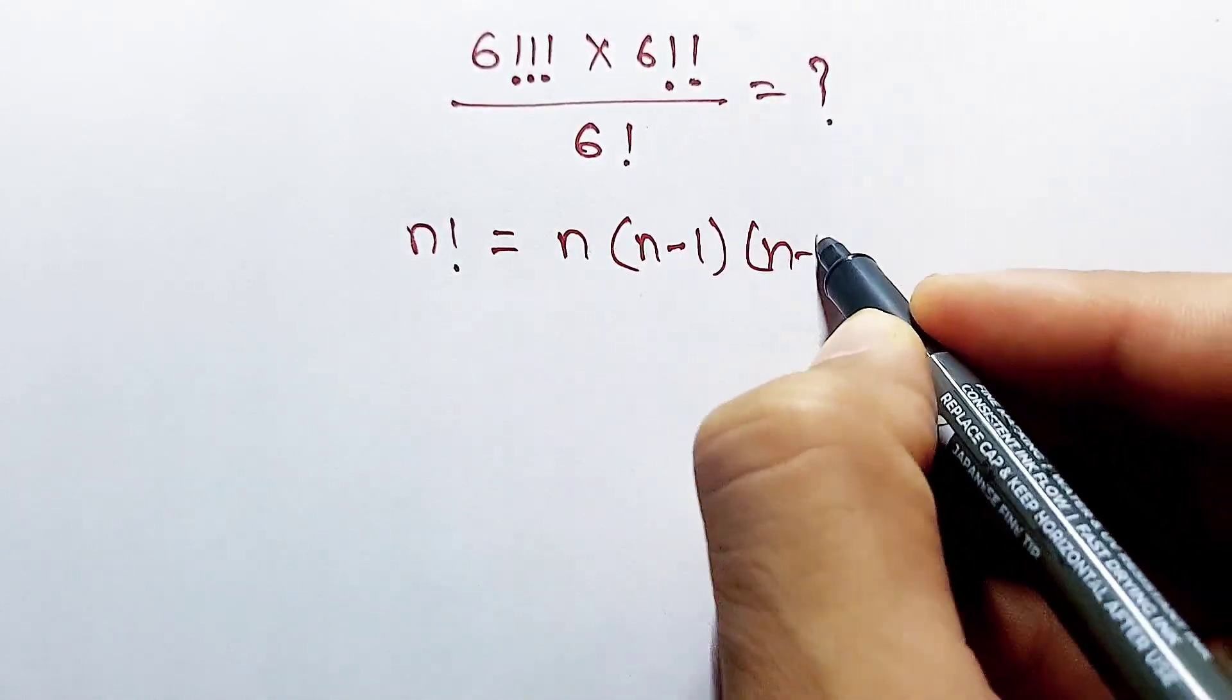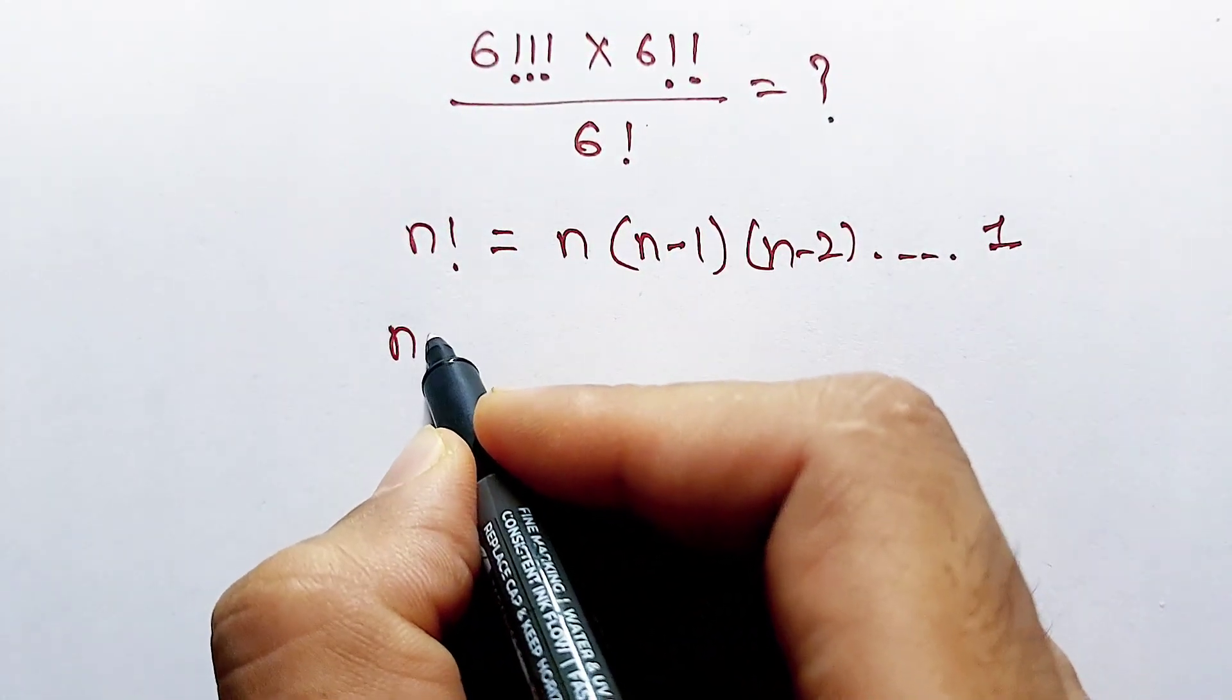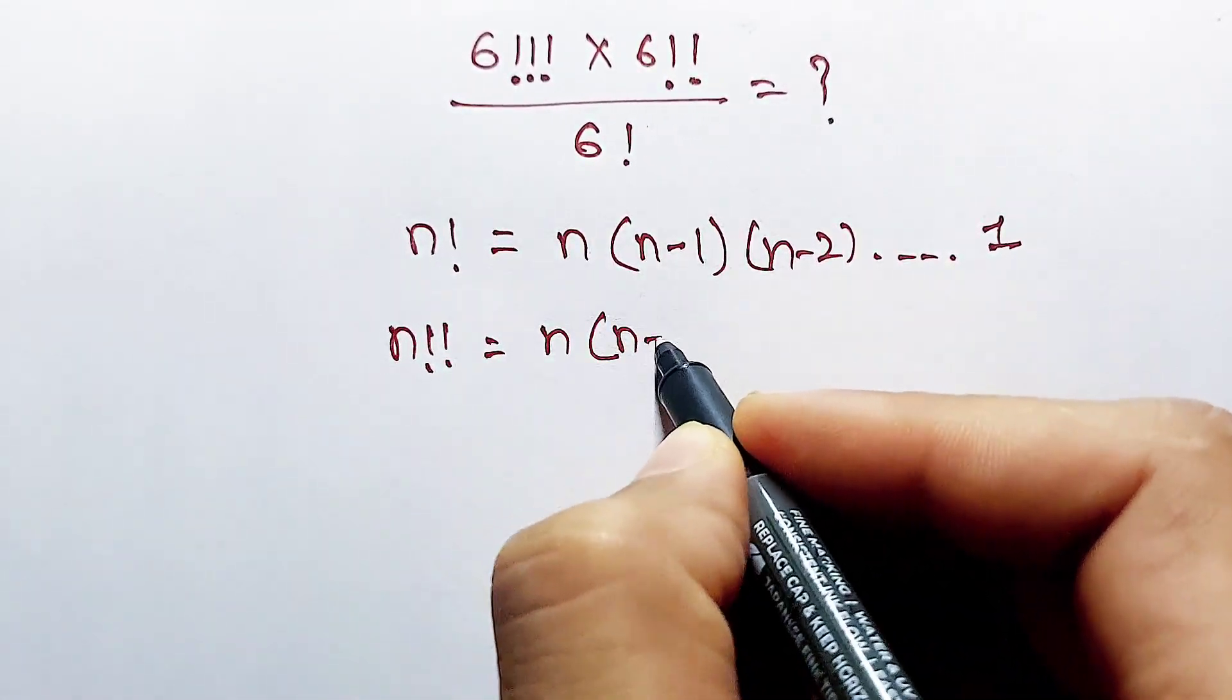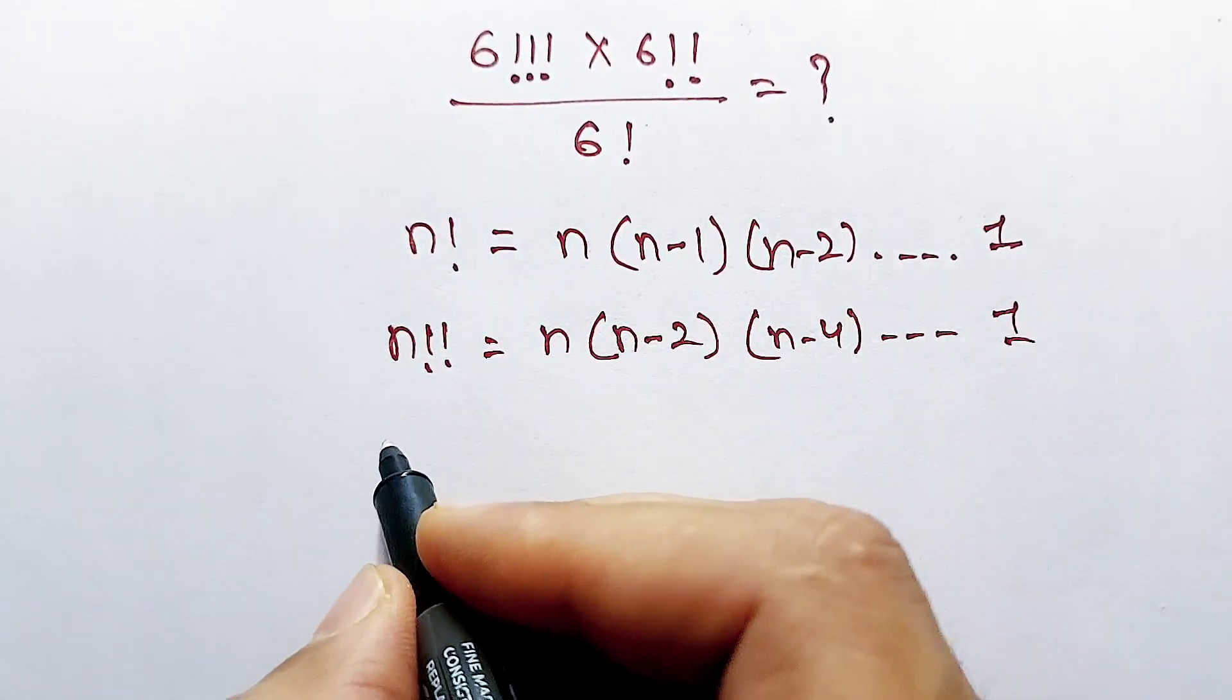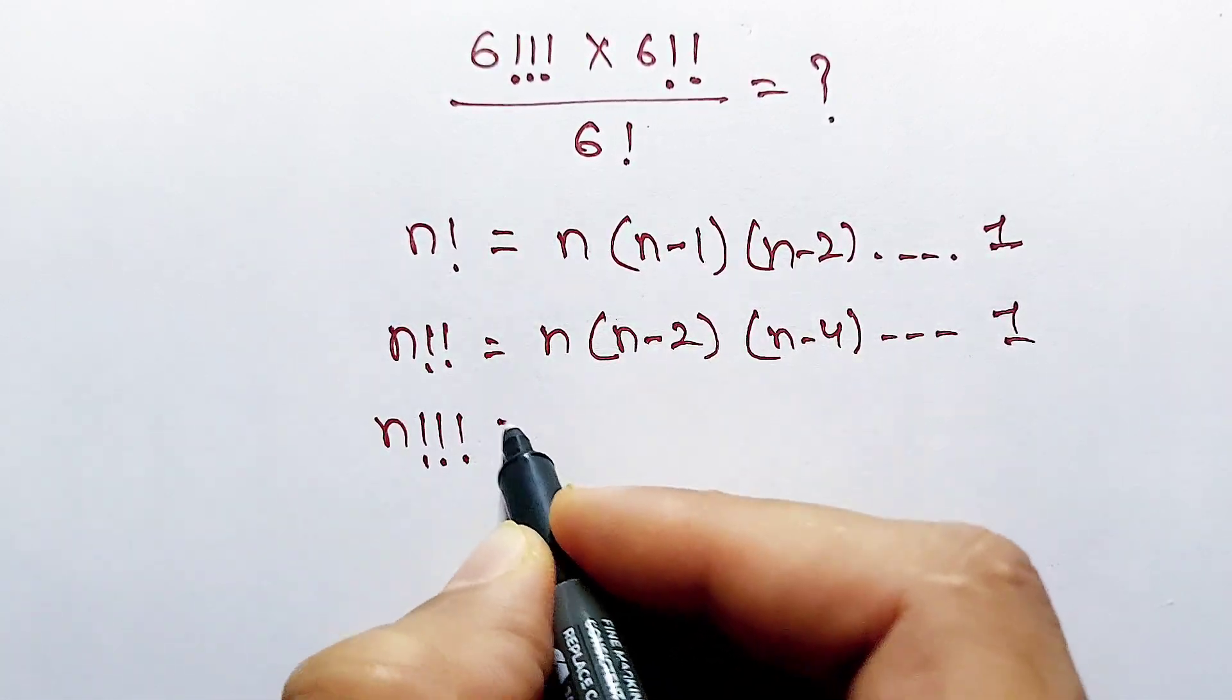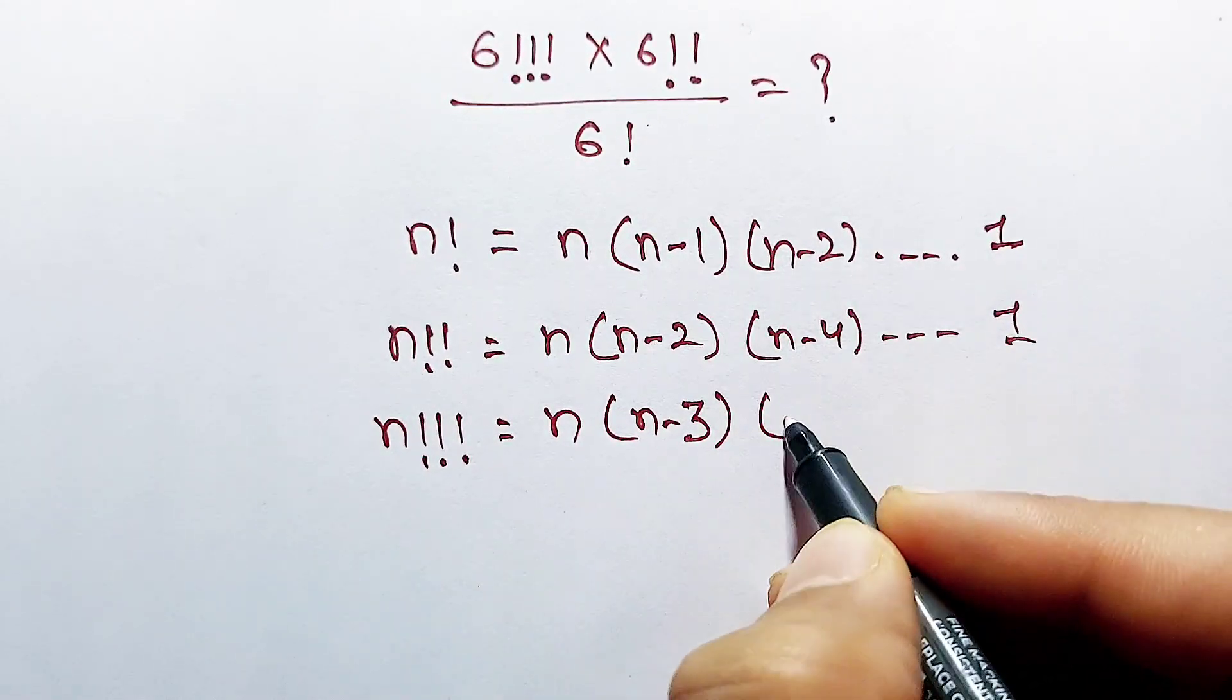Multiplying n minus 2 up to 1. And double factorial of n is equal to n multiplying n minus 2 multiplying n minus 4 up to 1. And n triple factorial is equal to n multiplying n minus 3 multiplying n minus 6 up to 1.